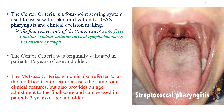The modification was made by a person called McIsaac. It uses the same four clinical features but also provides an age adjustment to the final score, and can be used in patients three years of age and older. The original Centor criteria was only used for patients over 15 years of age, whereas the modified version includes patients from 3 to 15 years as well as older age groups.